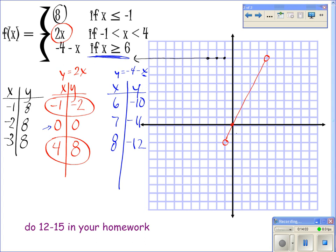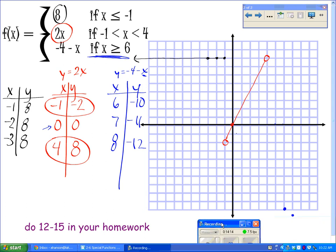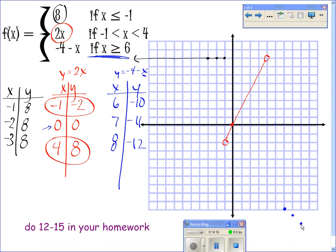So we'll plot these. Are they open or closed circles? All of them are closed. So we'll go 6, negative 10. And this one's going to kind of go off the screen here with an arrow going to the right. To take it in pieces, hence piecewise graph. Questions?